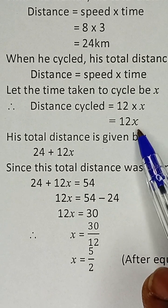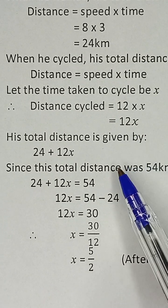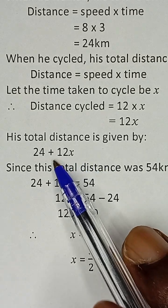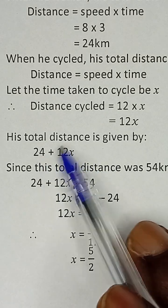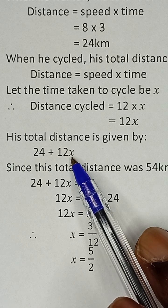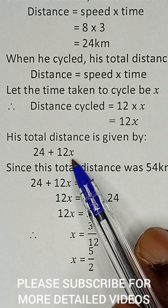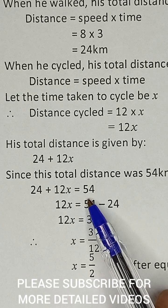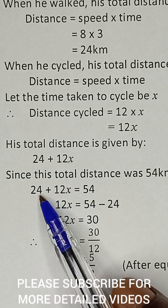We are told that the total distance the man covered was 54 km. So the 24 km which he walked and the 12x km which he cycled all together should give us 54. So 24 plus 12x equals 54.